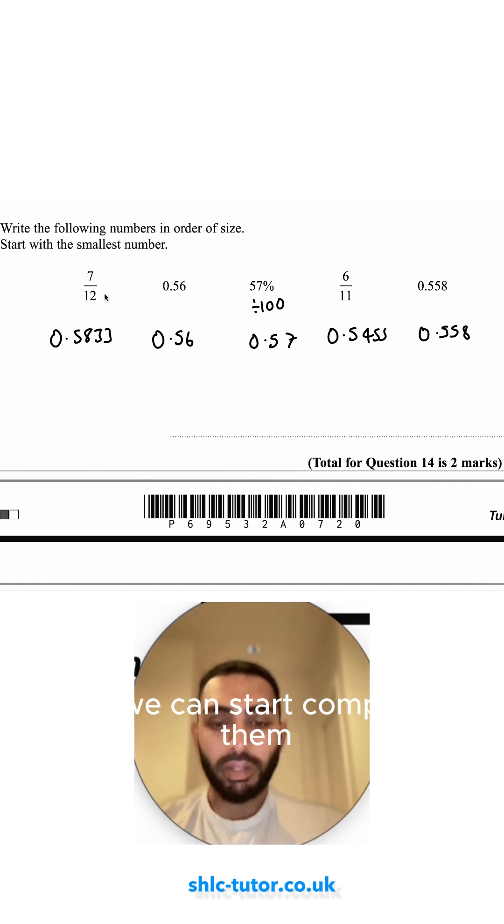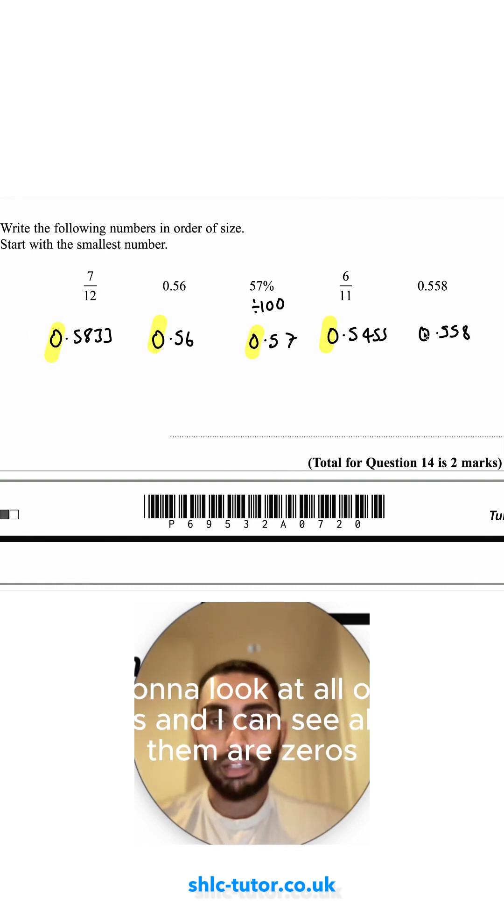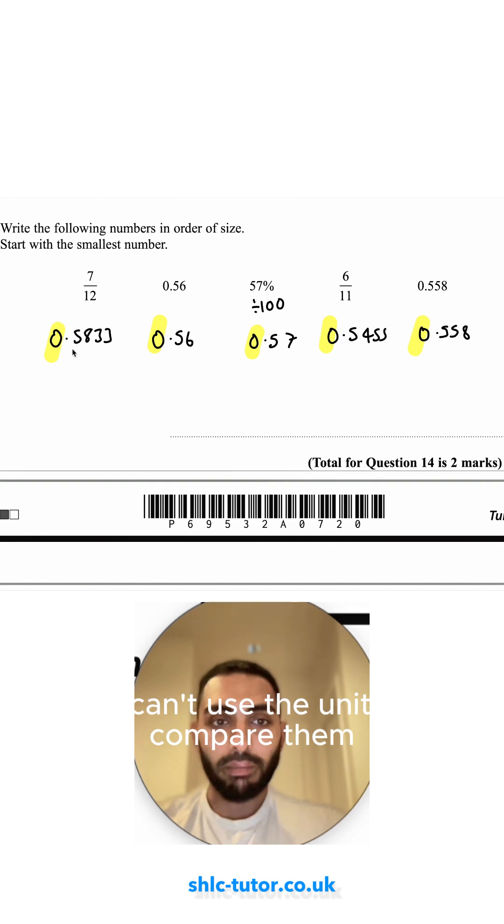Now we can start comparing them. I'm going to look at all of my units, and I can see all of them are zeros. So I can't use the units to compare them. Then I'll look at the tenths. All of them are fives, so I can't compare them either.